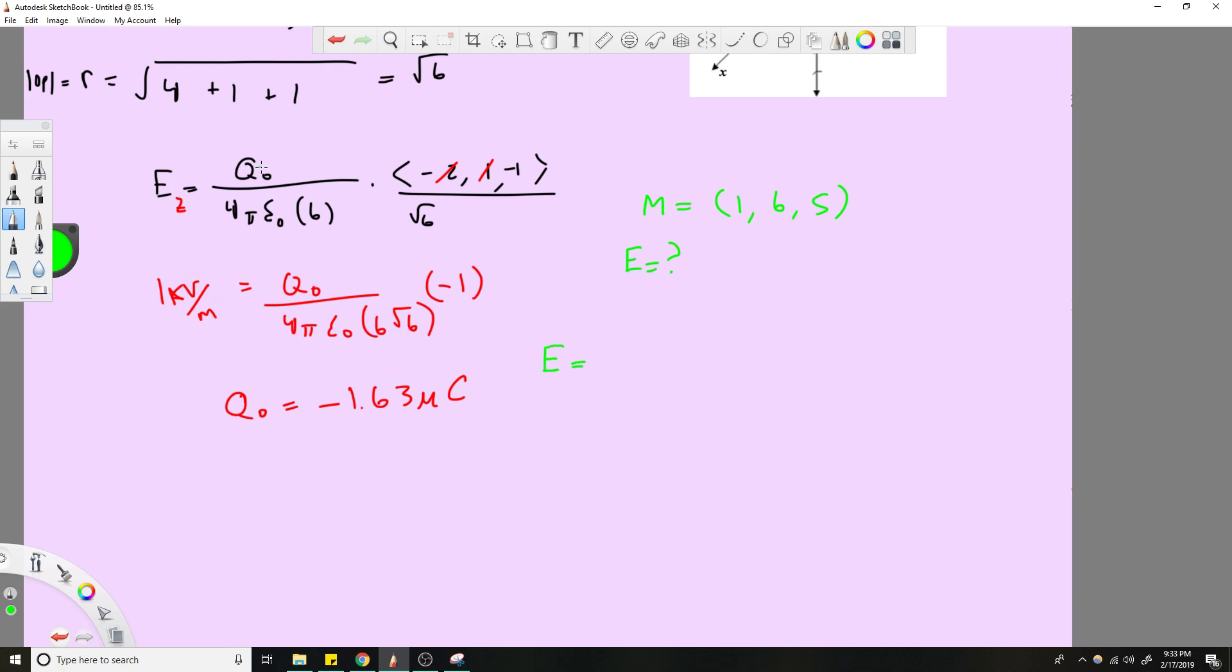E equals Q0. We're using the same equation. Q0 is negative 1.63 microcoulombs over 4 pi epsilon0. R would be the magnitude of this value, right? Same thing we did before. Square root of 1 plus 36 plus 25. And that would be to the 3 halves. And then you're going to multiply by the vector 1, 6, 5. Because it'd be the vector O, M. And O, M is M minus the origin point, again, because that's where our charge is.